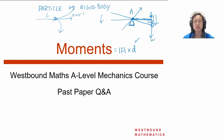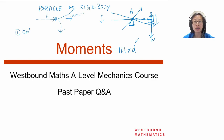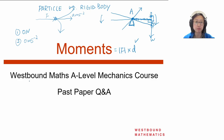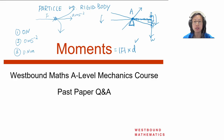Now that we've seen the definition of moments, we need to update our definition of equilibrium. In the forces lecture, we said that for a particle to be in equilibrium: first, there is zero net force in any direction; second, the particle is moving with zero acceleration — either stationary or at constant velocity. Now that we've introduced the turning effect, for a rigid body to be in equilibrium, it also needs to have zero net moment, with units of Newton-metres, in either direction — clockwise or anticlockwise. Let's jump into the first question.